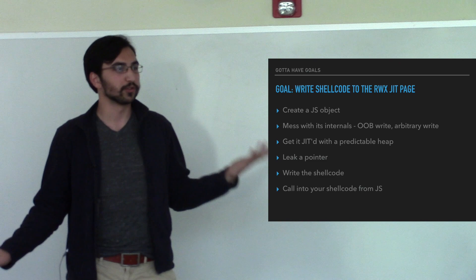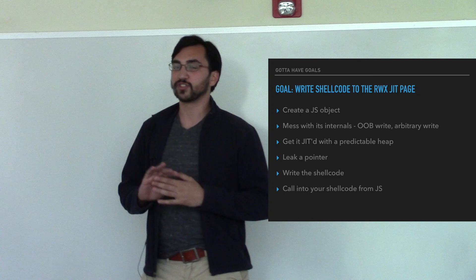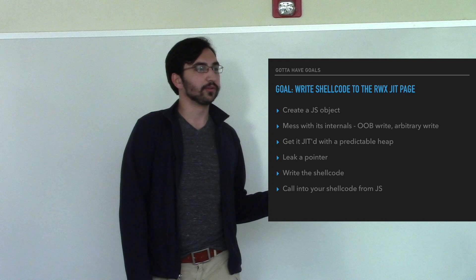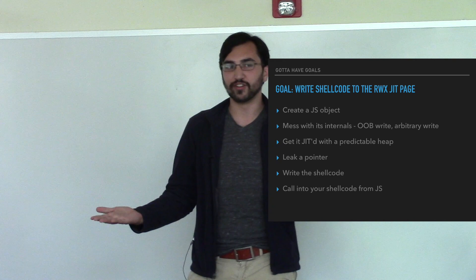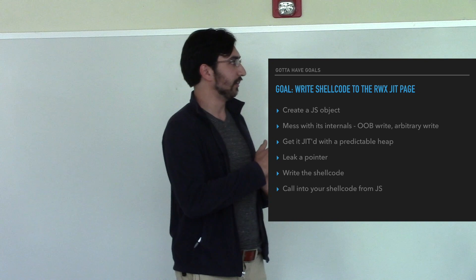At a very high level, the steps are: create some object in JavaScript, mess with it, and look for something that lets us do an out-of-bounds write, because we're trying to mess with data in memory that will end up being compiled code. We also want to force the browser to JIT our code — if it's never JIT-compiled, we're just running in JavaScript land and can't do much. There are pretty deterministic ways to make JIT happen, especially by defining our own functions — most browsers will just go ahead and JIT that right away, assuming we'll use it later.